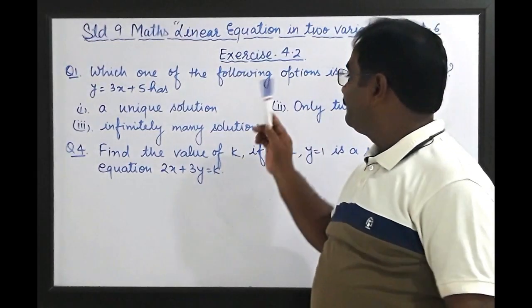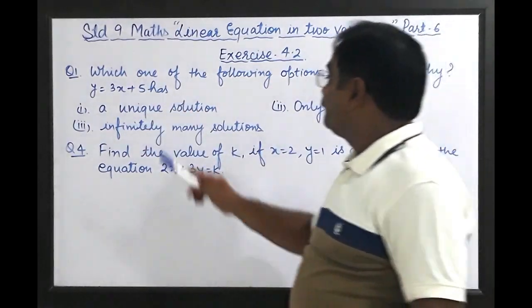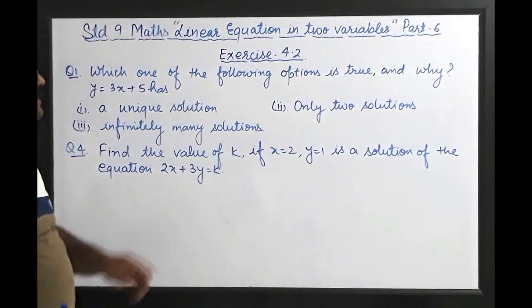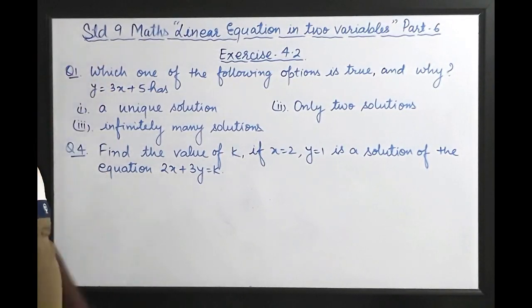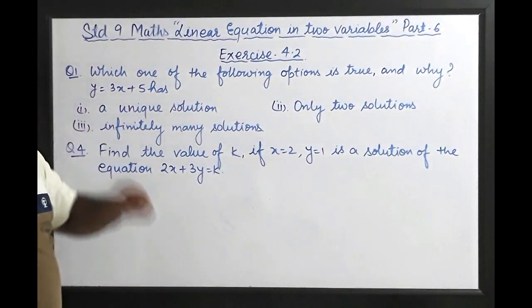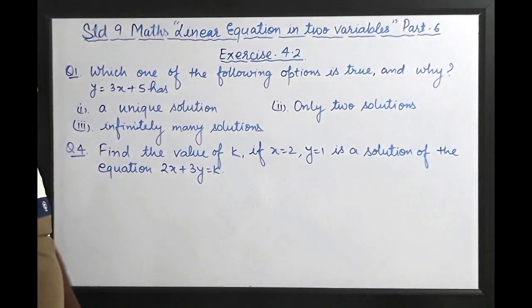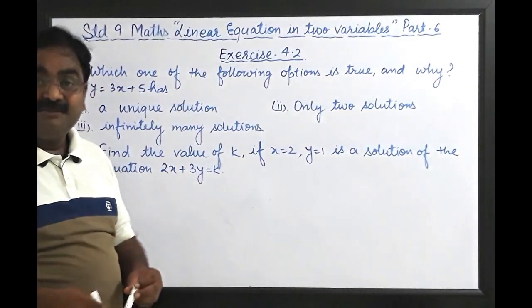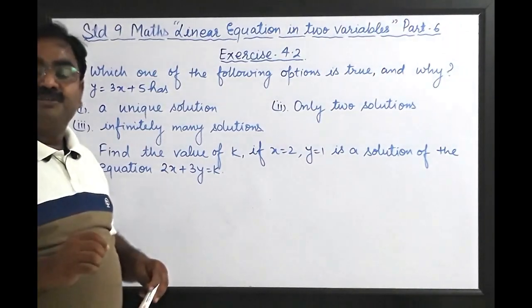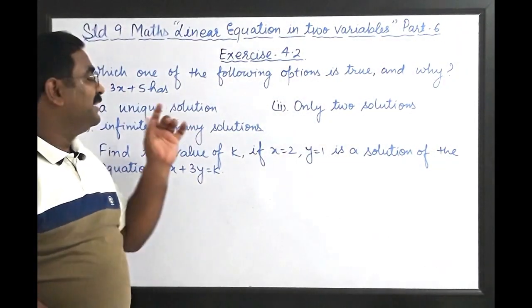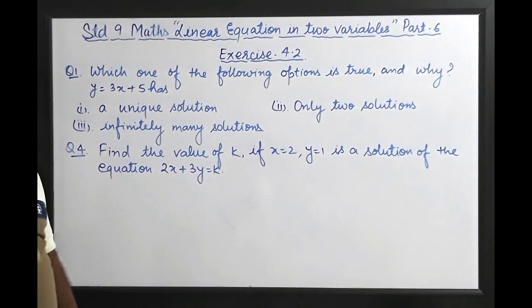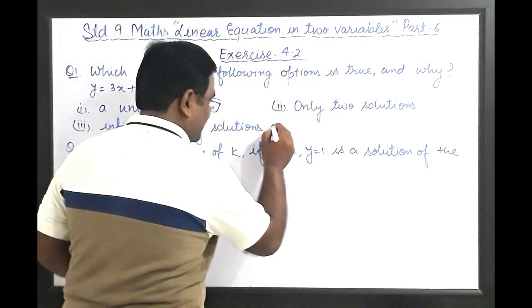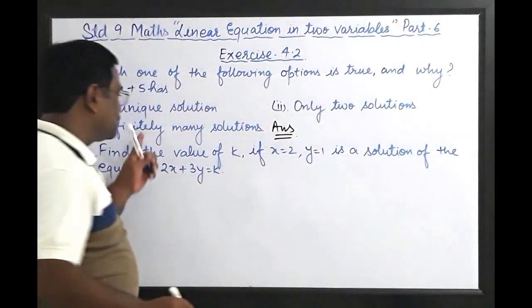The question is: y equals 3x plus 5. First of all, we have to recognize this equation. Is y equals 3x plus 5 a linear equation in two variables? The power of x and y is one, so therefore it is linear, and there are two variables, so it is a linear equation in two variables. We have read that a linear equation in two variables has infinitely many solutions. So our answer is the third option: it has infinitely many solutions.